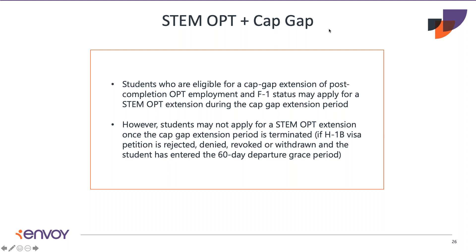For students eligible for the STEM OPT extension, it is encouraged to apply for it even if their H-1B cap petition is selected, because if the H-1B is not ultimately approved they have backup work authorization to fall back on. For example, if an OPT EAD is expiring in August but the student is eligible for a STEM EAD extension and their H-1B cap petition is still pending, they should go ahead and apply for the EAD extension. If anything were to ultimately happen with their H-1B, they can continue to work on the STEM EAD.